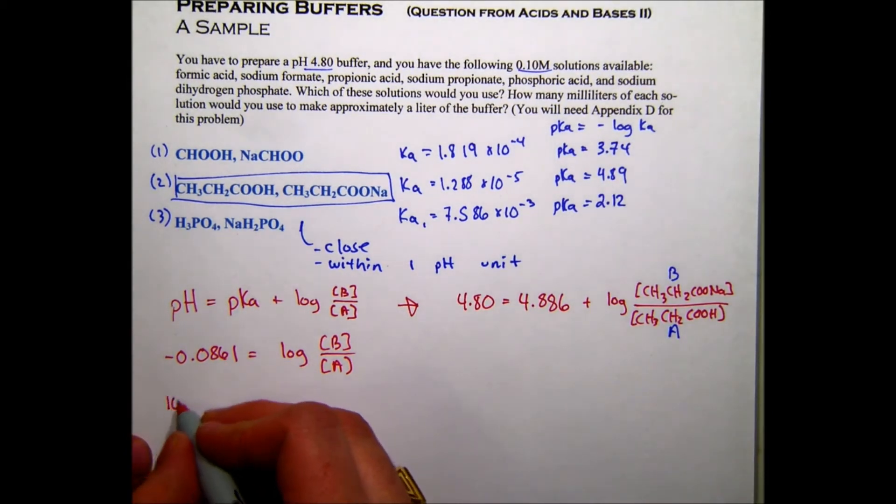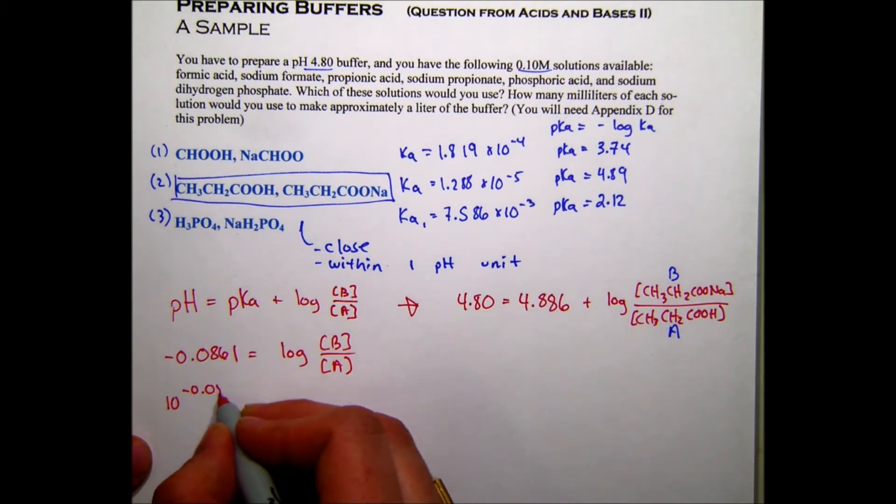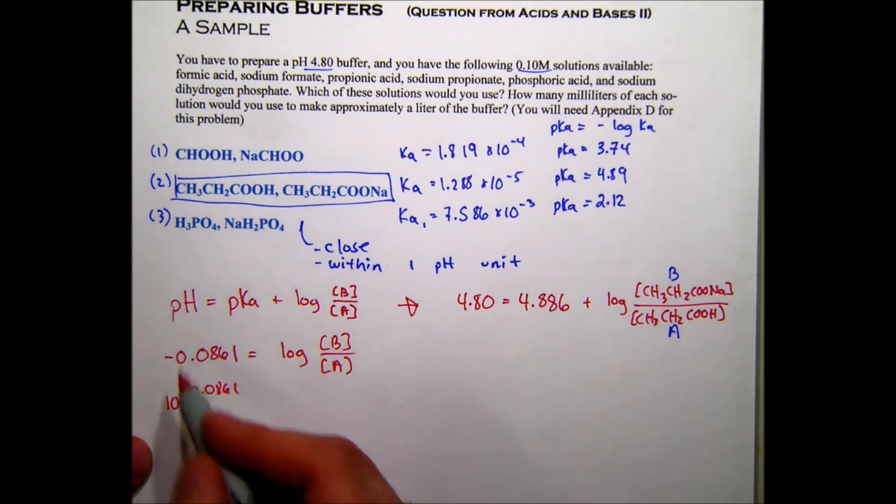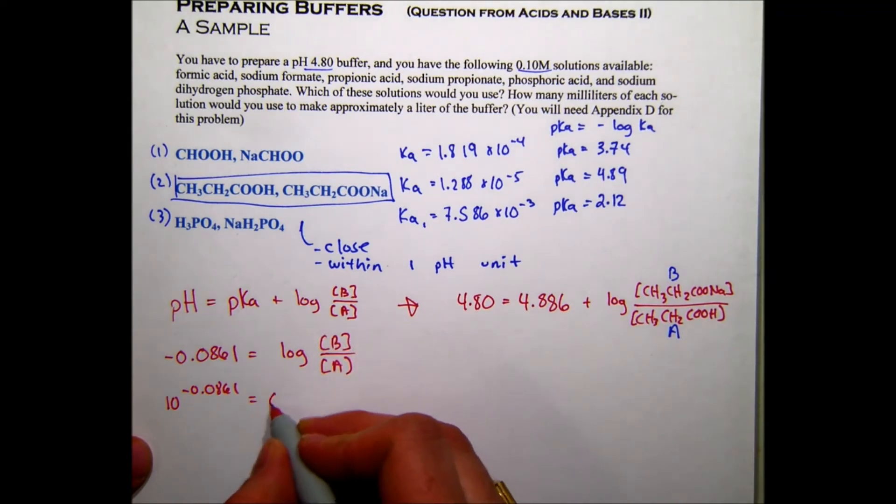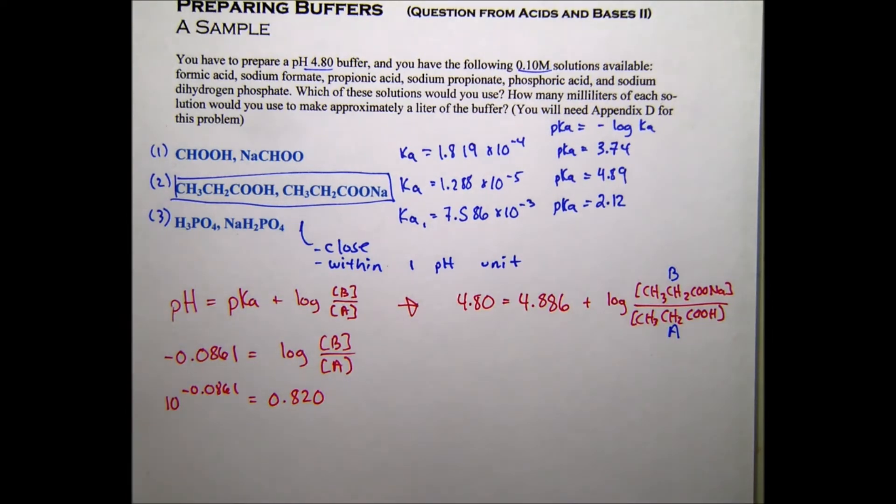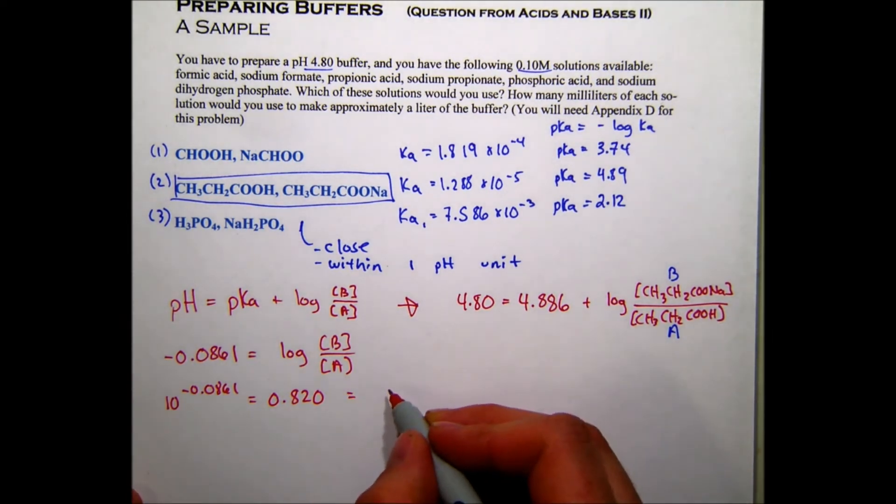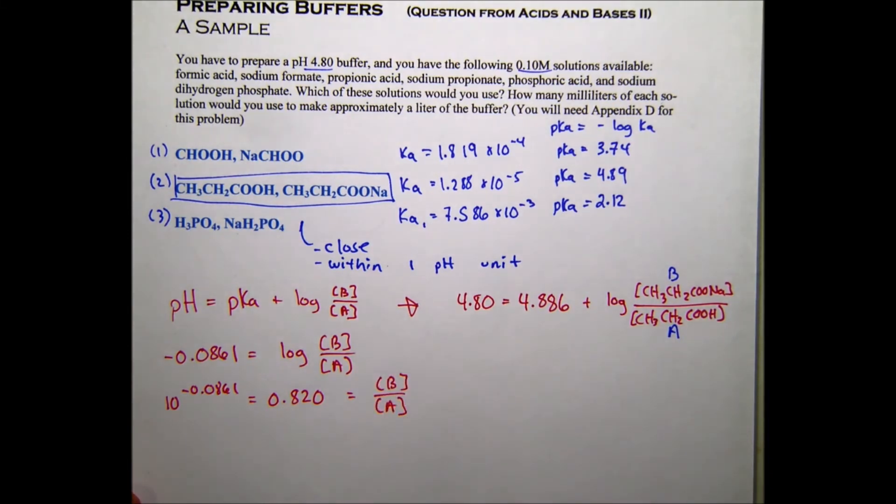So I know that 10 to the negative 0.086, if I raise it to that power, it's going to be 0.820, which is equal to the ratio of the base to acid.